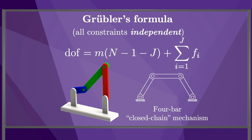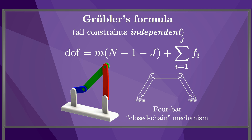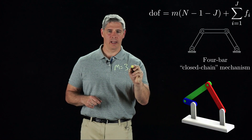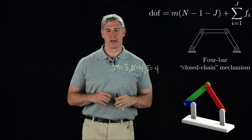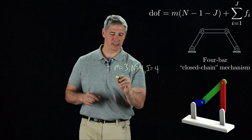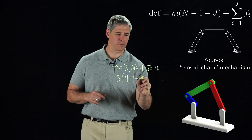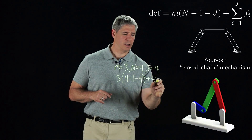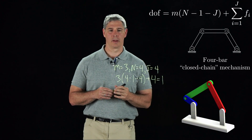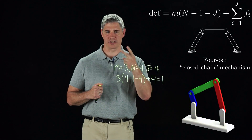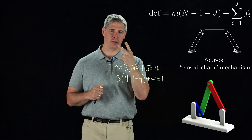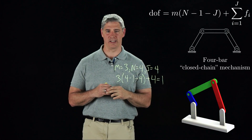The next mechanism is called a four-bar linkage, obtained by pinning the endpoint of the 3R robot to a particular location in the plane. This is called a closed-chain mechanism because there's a closed loop. As before, we have m equals three and n equals four, but now we have j equals four joints. Grubler's formula tells us that this mechanism has three times (four minus one) minus four plus four equals one degree of freedom. We would also predict this by the fact that pinning the endpoint creates two constraints, subtracting two from the three freedoms of the 3R robot to see that there is one degree of freedom.